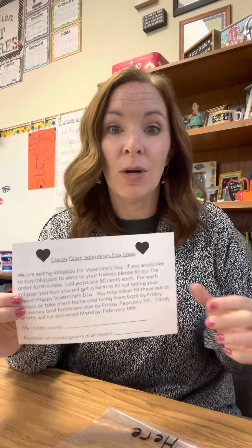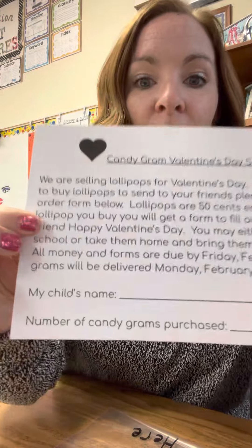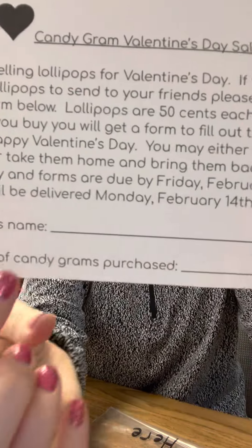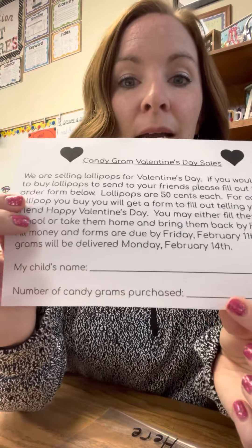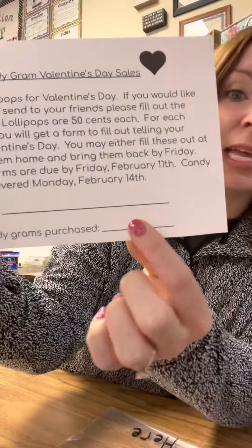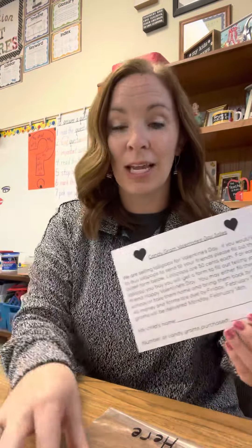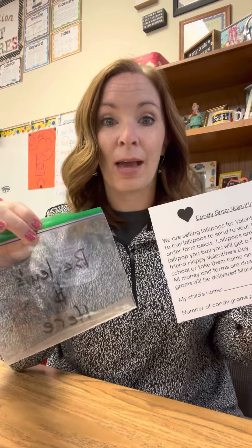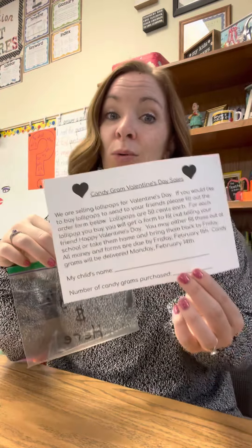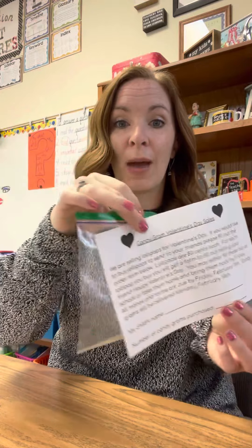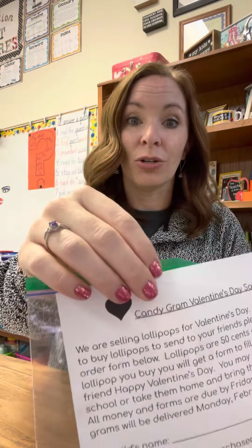Let's say my daughter Josie names eight people she wants to send a Candy Graham to. As her mom, I would fill this out at the bottom — my child's name — and I would write her name. Then I would need to put that my number of Candy Grahams purchased is eight, so I would put the number eight right here. If they're each 50 cents, I would send in four dollars in a bag. Josie and I would fill out her name, that we want eight Candy Grahams, put four dollars in this bag, and send it to her teacher.